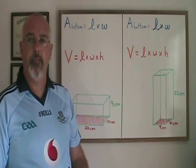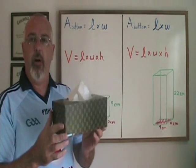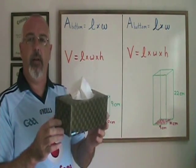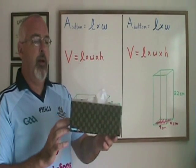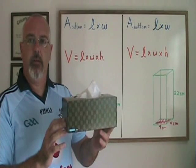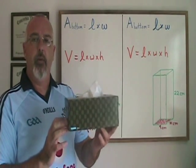A rectangular prism is a box. We can use a Kleenex box as an example of a rectangular prism, also known as a right prism. All the sides are rectangles, but not all of the sides have the exact same area, otherwise it would be a cube.